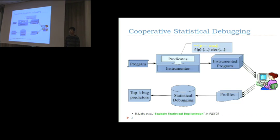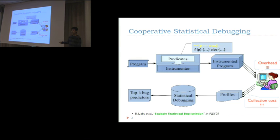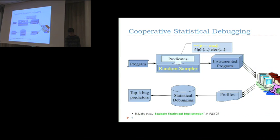However, to make this approach practical, there are several issues to handle. Since the user needs to run the instrumented version, we need to make sure the overhead at the user's side is pretty low to encourage participation. From the developer's perspective, there is also the collection cost and analysis cost. Several researchers have proposed a sampling-based approach: instead of instrumenting the full program, only a sample subset of elements is executed at the user's side, reducing overhead.